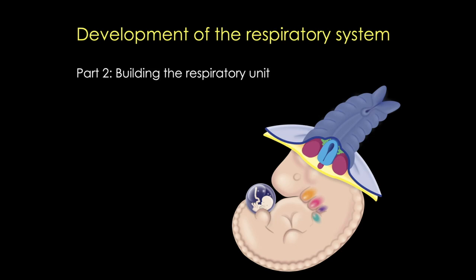Welcome to Respiratory System Development Part 2: Building the Respiratory Unit. In Part 1, I covered the development of the conducting zone. During lung development, there has to be a transition from placental gas exchange to autonomous gas exchange. The adaptive changes that need to occur are: first, the epithelium has to have the ability to exchange oxygen and carbon dioxide; second, surfactant has to be produced; and third, we have to establish parallel pulmonary and systemic circulations. In this video, I'll talk about the first two changes. I'm Dr. Catherine Moore, the Histology Wizard.